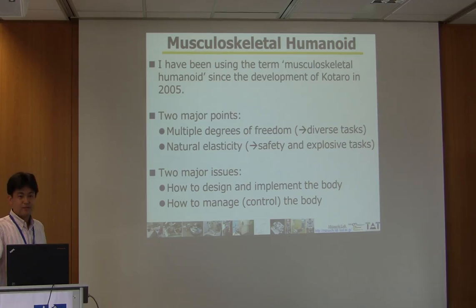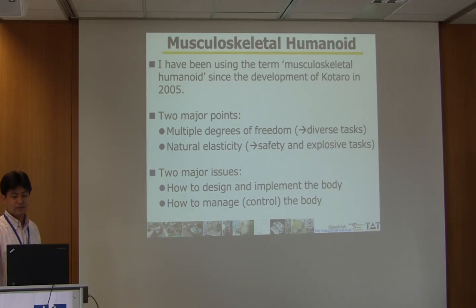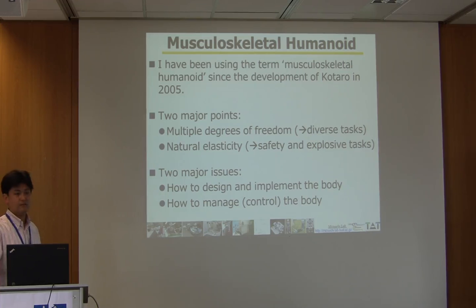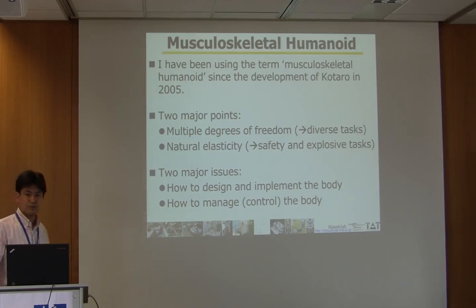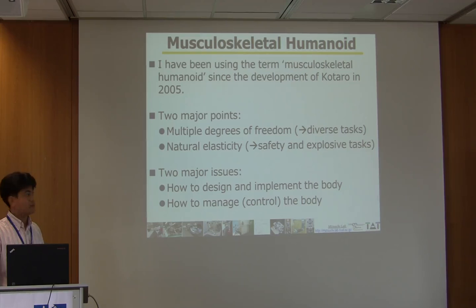I have been using the term musculoskeletal humanoids since the development of Kotaro in 2005. The two major points of the musculoskeletal system are: multiple degrees of freedom that can be utilized for various tasks. We humans have more than 200 degrees of freedom in our body, and we can unconsciously use all of these many degrees of freedom for various tasks and motions. One of the possibilities of using this type of robot in the future is the diversity of tasks.